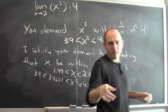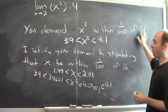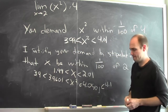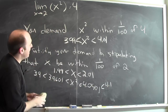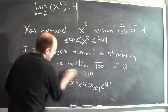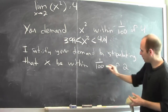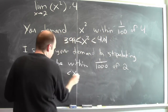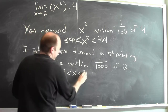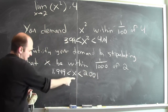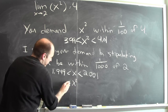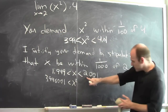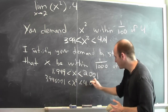I can do the same thing for other demands you might make. You might demand that x squared be within a hundredth of 4, meaning x squared is between 3.99 and 4.01. To satisfy this, I need to specify how close x has to be to 2. Let's try a thousandth. If x is within a thousandth of 2, that means x will be between 1.999 and 2.001. Then x squared is bigger than 3.996001 and less than 4.004001.